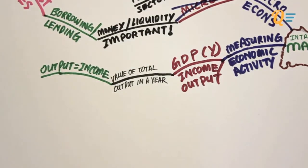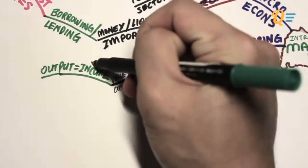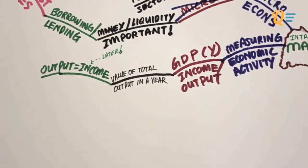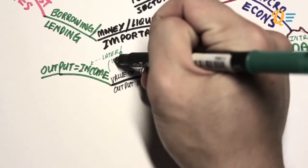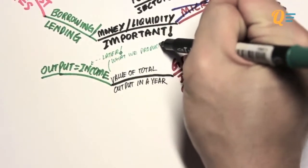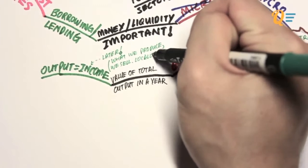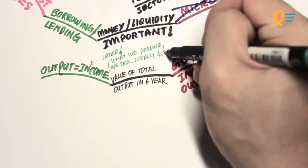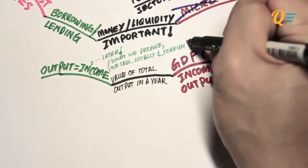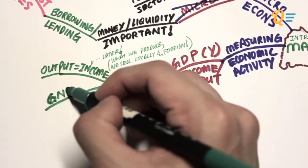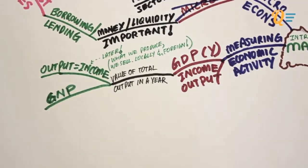If we know the income levels, then we know whether the government is running the economy properly or not. We're going to go through in detail why output equals to income later. In a nutshell, we are assuming that what we produce, we are going to sell locally as well as to foreign countries, and this translates into income for us.